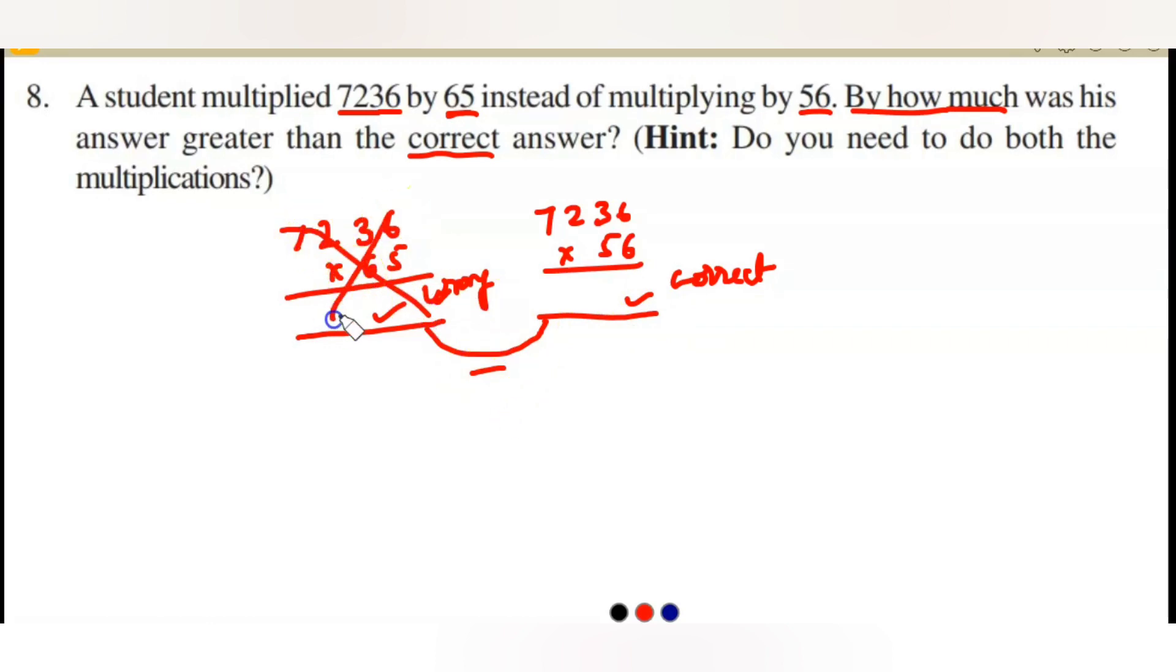Is it needed to find out both answers and then do the subtraction? No, not at all. You need not do this and this. Instead, you can just find the difference, how many more number of times he has taken. Just take 65 and 56 and subtract. This is the actual number 56, he has done with 65. So if you take difference of these two numbers and multiply with 7,236, that gives you the answer. This is the simple way to do this.